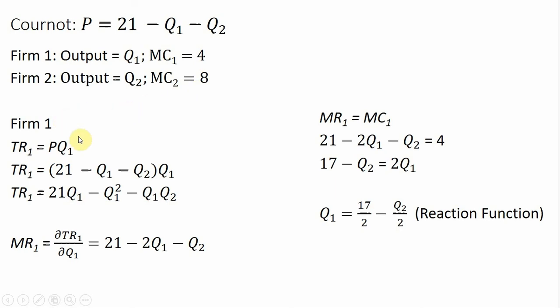We'll start with Firm 1. We'll find Firm 1's total revenue. Total revenue is price times quantity. In this case, it's going to be price times the output of Firm 1. So for P, we are going to substitute in this equation up here. And that price equation will be multiplied through by the output of Firm 1 to get something like this.